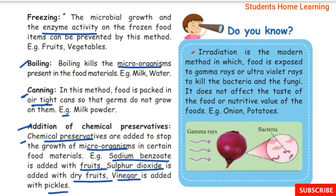Do you know? Radiation is a modern method in which food is exposed to gamma rays or ultraviolet rays to kill bacteria and fungi. It does not affect the taste or nutritional value of the food. Example: onion and potatoes.